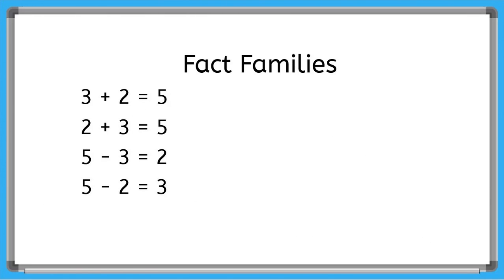Like with adding unknown numbers, we can use fact families to help us find the missing number in a subtraction problem as well. So look at this example fact family here on the left. I have 3 plus 2 equals 5, 2 plus 3 equals 5, then the sum becomes the first number. 5 minus 3 equals 2, and 5 minus 2 equals 3.